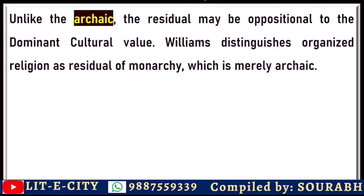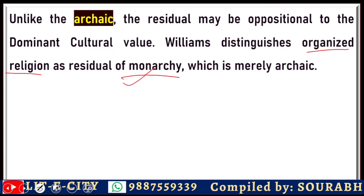Archaic has lost its significance, but residual is still followed by a good portion of society. Raymond Williams gives the example of monarchy and organized religion. He says that monarchy is almost archaic — it has lost its value as a cultural icon. But organized religion can be taken as a residual of this once dominant value. Monarchy is no more; it is archaic. While organized religion, even in our so-called scientific age of reason, still holds value for a great percentage of people.